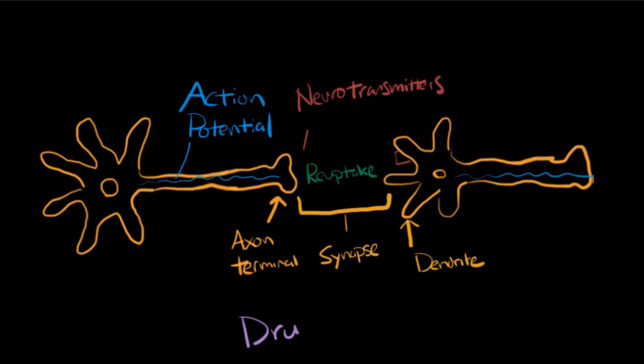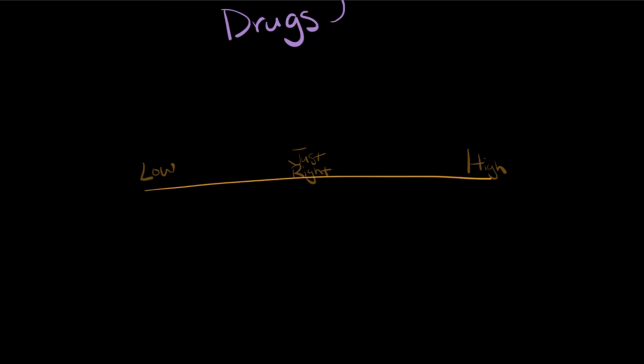This same synapse is also the location where a lot of drugs have their effects. If the signaling is out of balance—either too little signal or too much signal—then we could use drugs to help bring it back into balance. On the other hand, drugs that are used inappropriately can throw our own natural signaling out of balance.